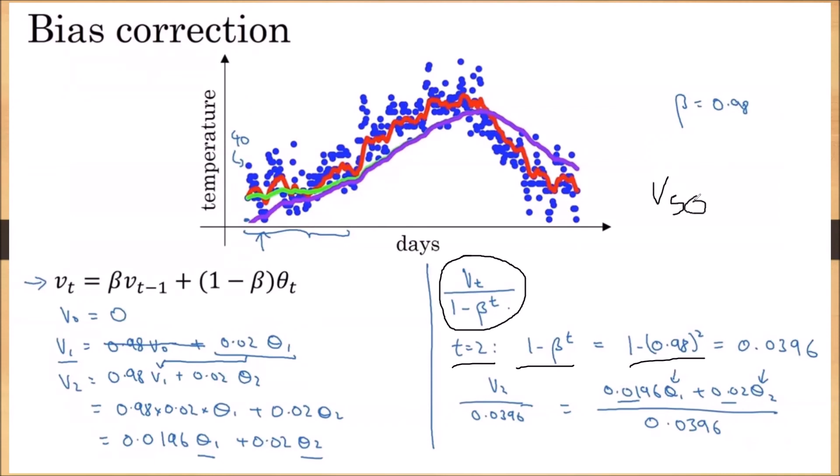But when we are finding for V₅₀, it is 1 minus β power 50, means 0.98 power 50 is almost negligible. We can almost neglect it, it is a very smaller value.